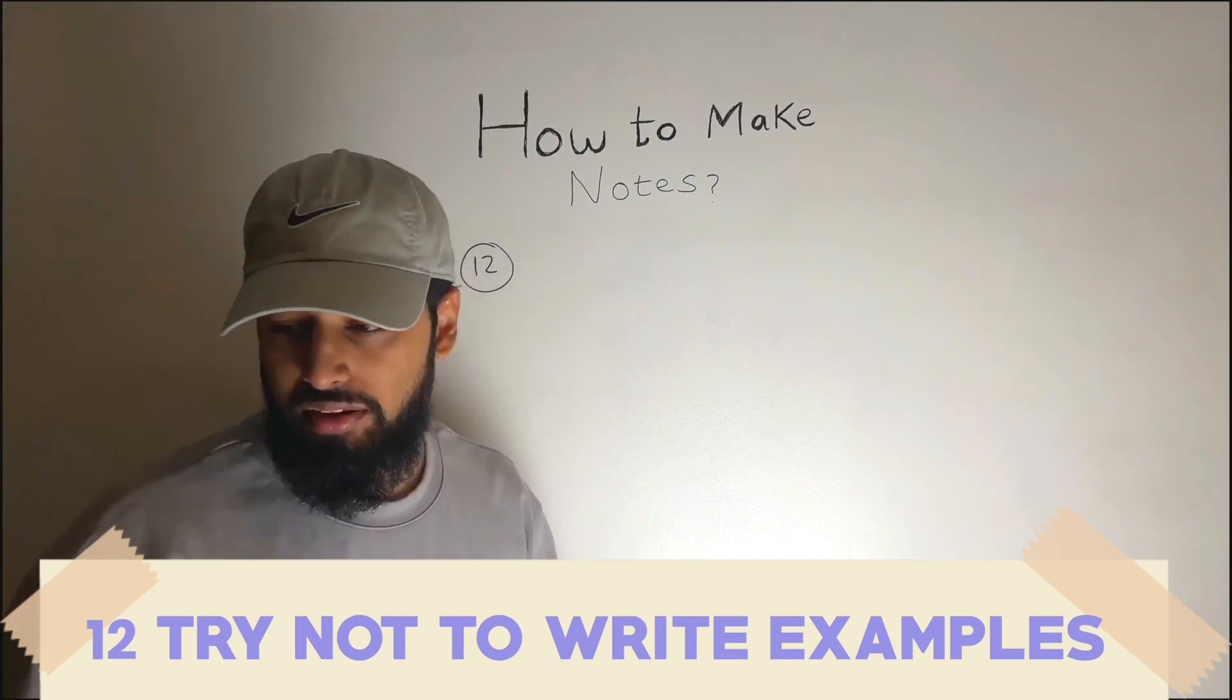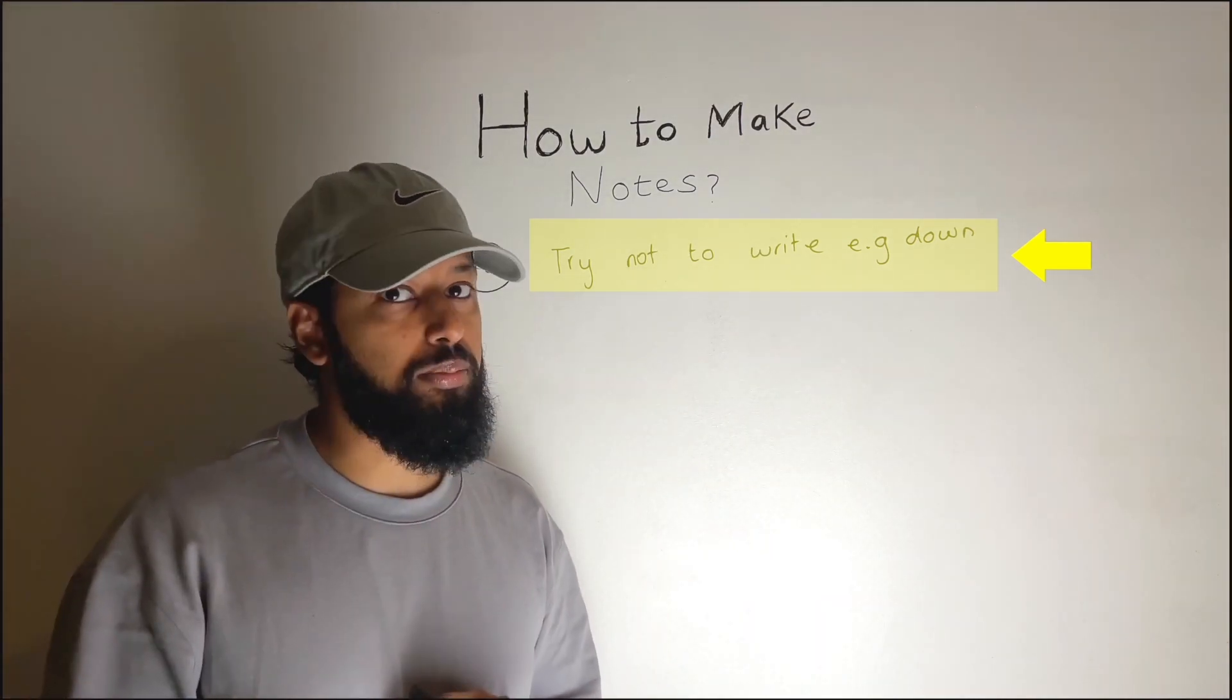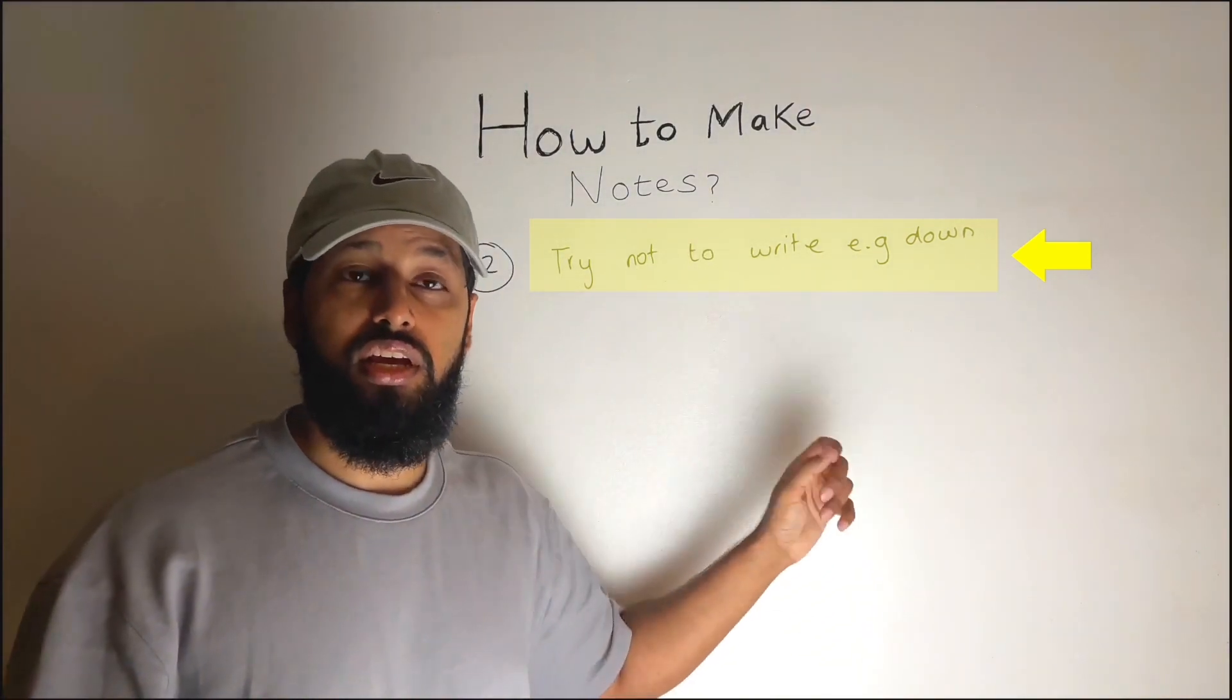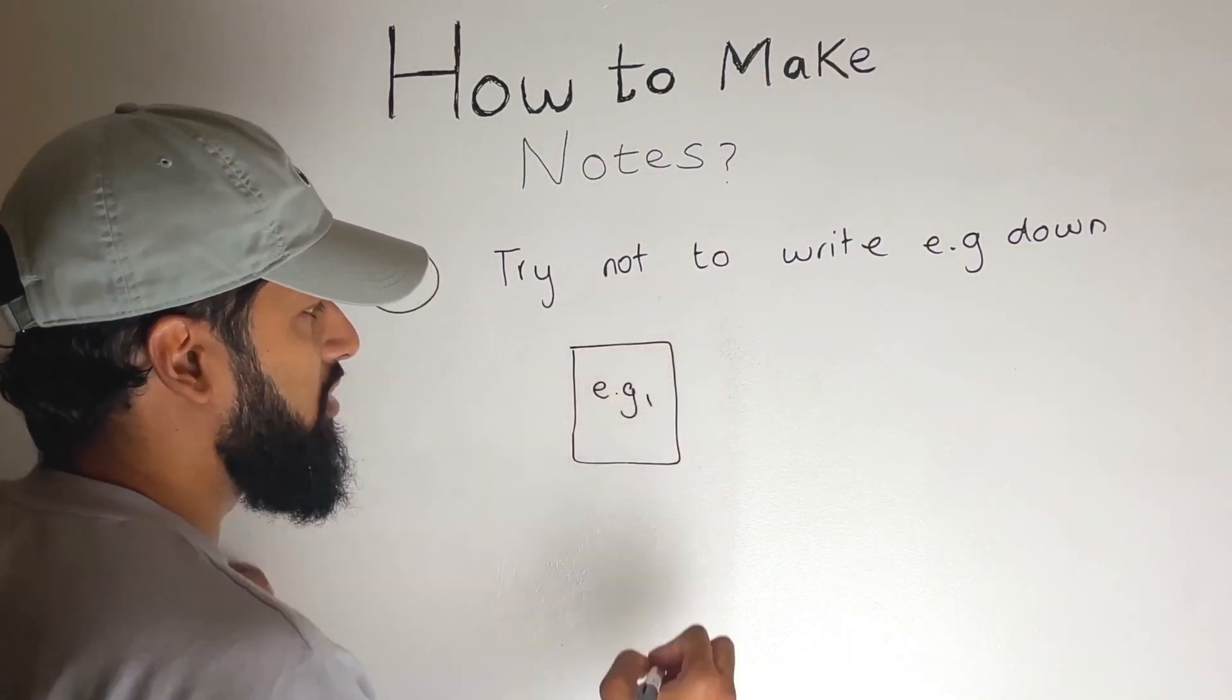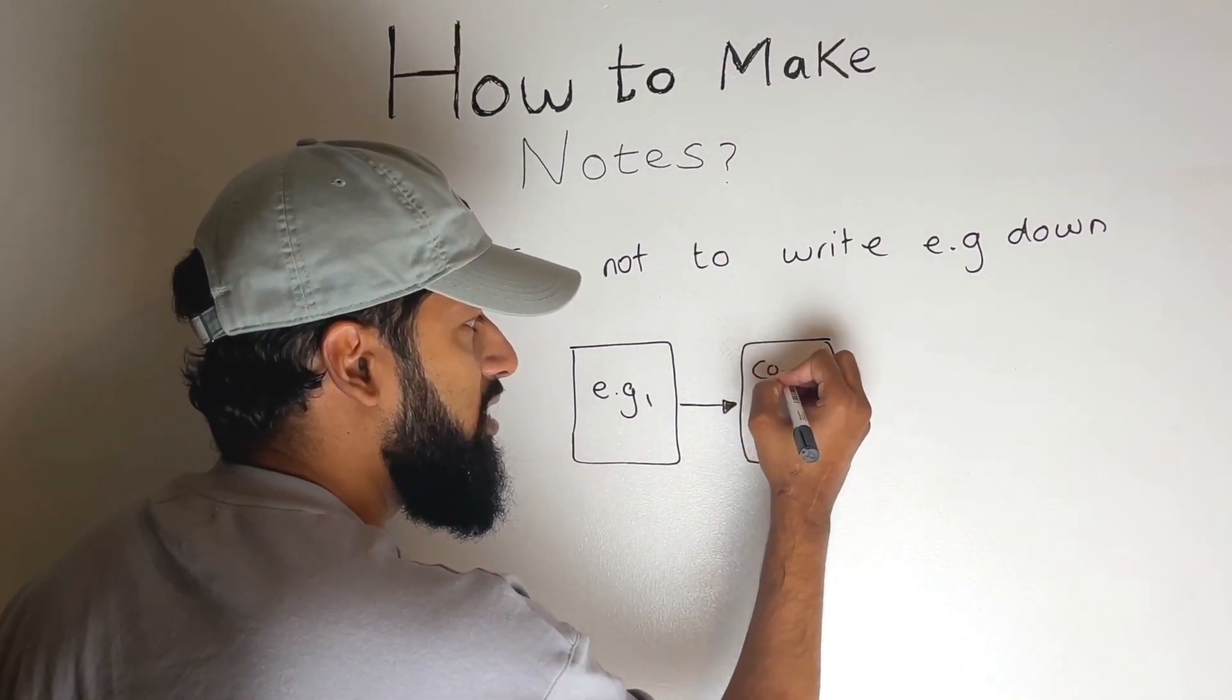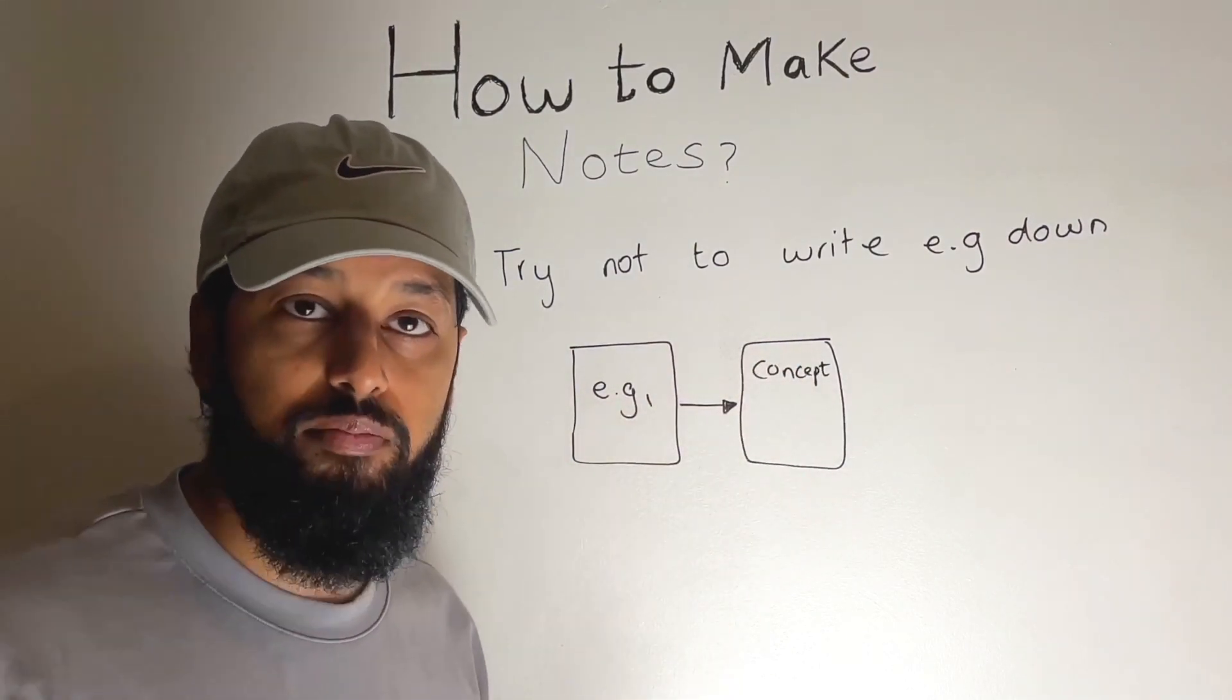We're at the end game now. Number 12, try not to write examples down. Now this might sound a bit scary. How can you not write examples down? And especially if you understand that examples are very good way of learning. Any great teacher will always give you examples, they will always give you analogies. So examples are actually a very good way of understanding but we don't want them in our notes. Here's why. So when you're learning a concept you'll generally learn it through an example. Okay, so example, let's call it example one. Now the problem is they're showing you an example because they really want to teach you a concept. So the skill that you need to learn is not what the example is but what is the concept, the generalized concept that you need to learn. So that takes effort and that is the point of making notes.